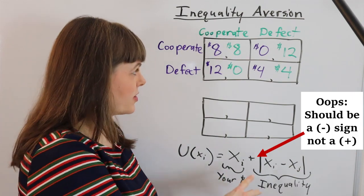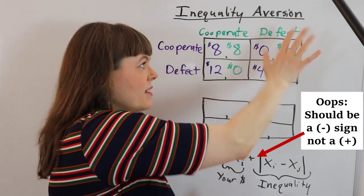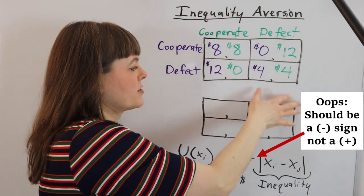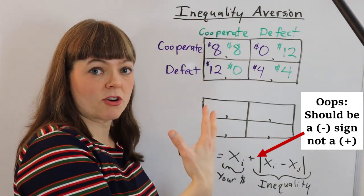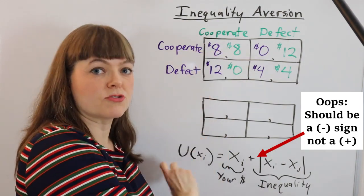This isn't a complicated utility function, but it will change the payoffs. What I'm going to do next is map these prisoner's dilemma payoffs onto this game theory matrix, except instead of the units being dollars, the units are going to be utility.